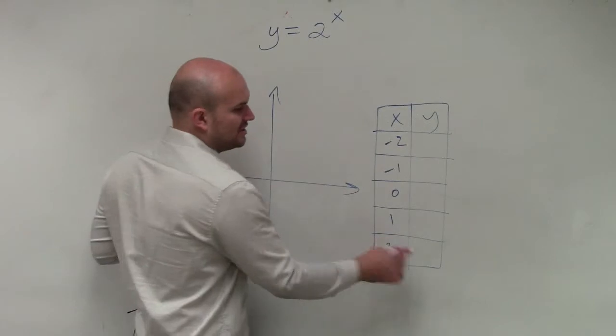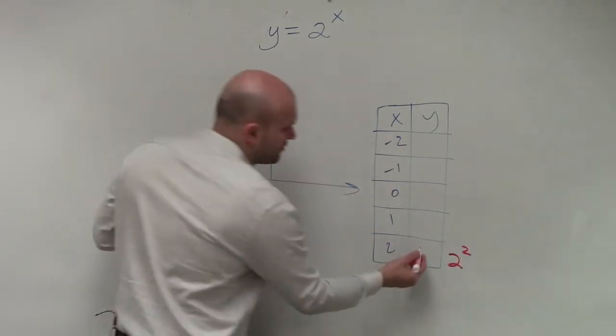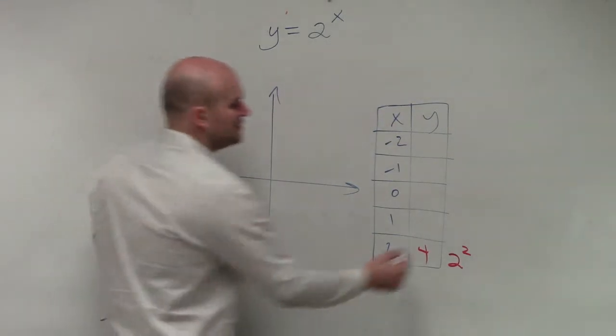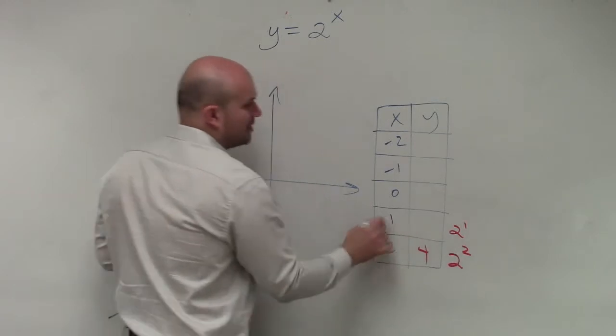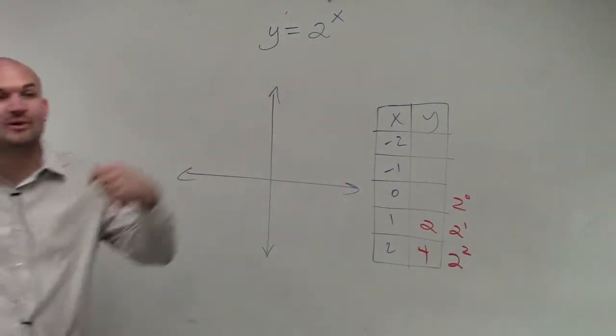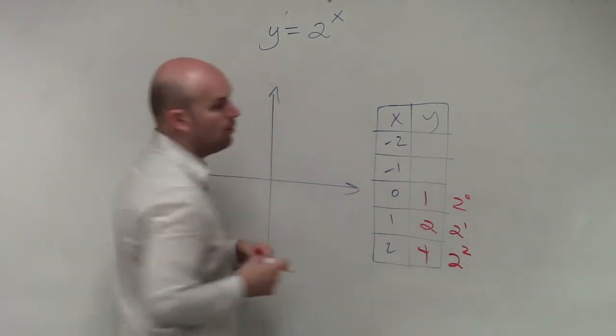So the first thing, you're going to plug in 2 to the second power, which I think everybody would be familiar with, which is going to give you 2 squared, which is 4. If you do 2 to the first power, that's going to give you 2. 2 to the 0 power, a lot of students forget. But remember, any time you have a base raised to the 0 power, that's going to give you 1.